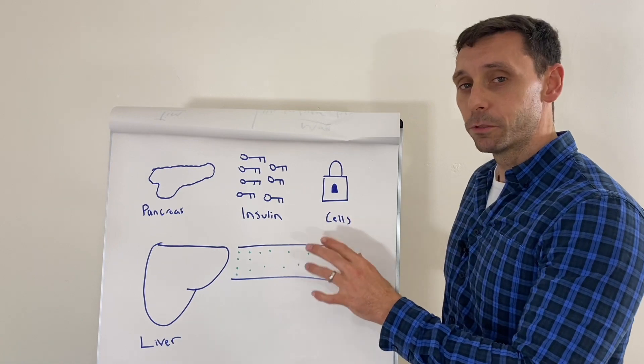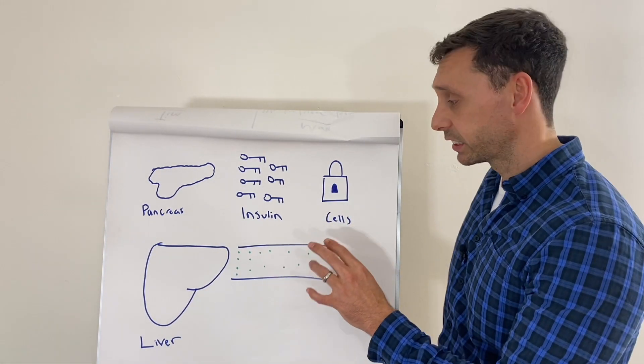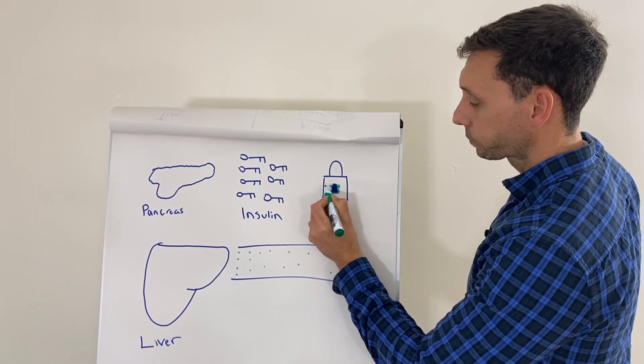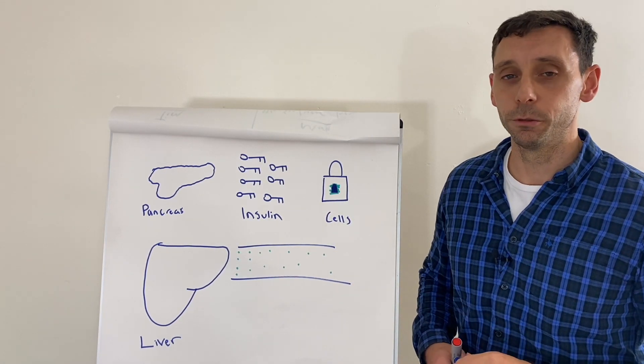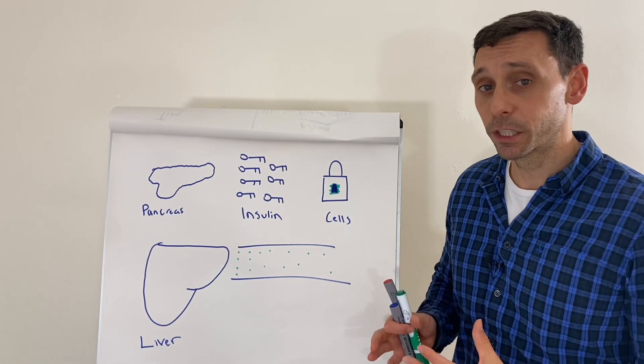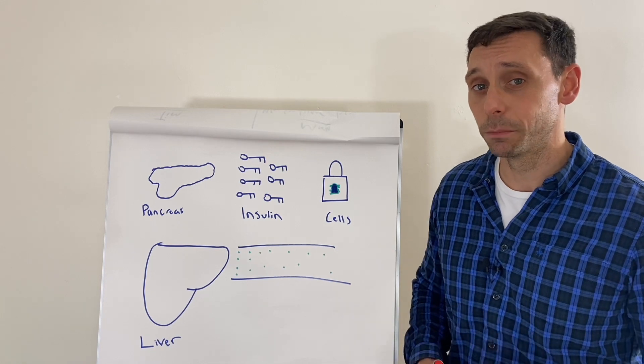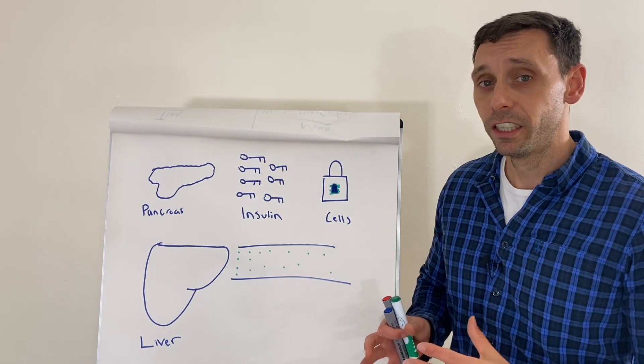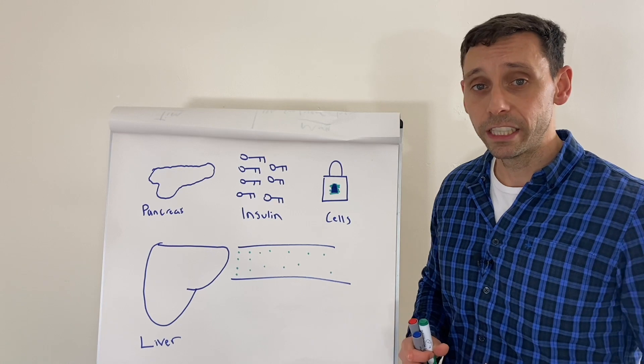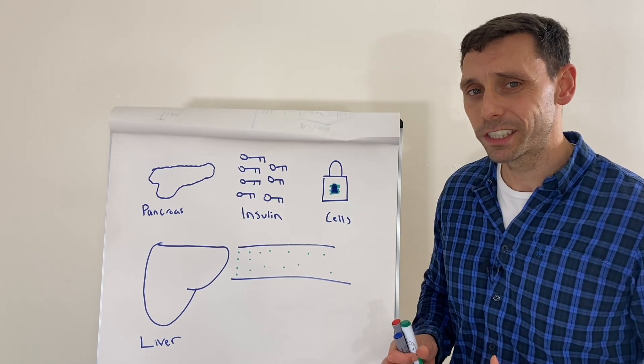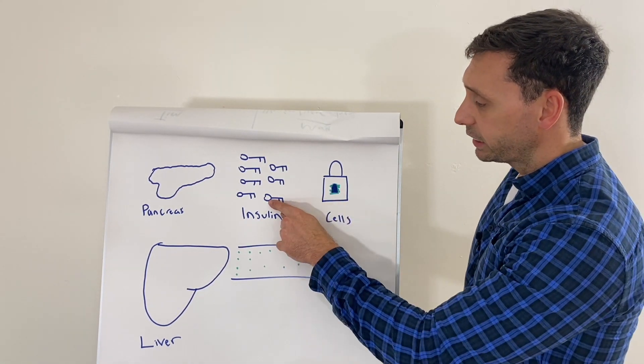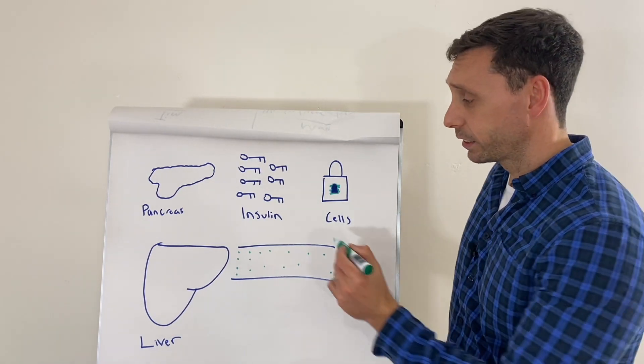So what starts happening in type two diabetes to loop back to this term insulin resistance is the cells start to get clogged up by fat. So one of the key drivers for type two diabetes, one of the main reason why it happens to people is people are carrying too much fat or they're obese. 80 to 90% of people with type two diabetes are diagnosed because they are carrying too much weight. There's a small percentage of people that have it because of genetic reasons or old age where things are just starting to wear out. But the overwhelming majority is to do with too much fat which is clogging up these cells. So as a result, the keys aren't fitting the locks. So some keys are still fitting the locks, but not as many.